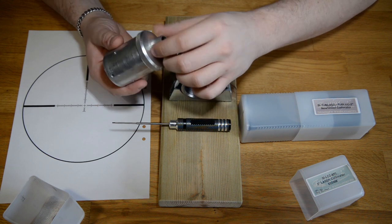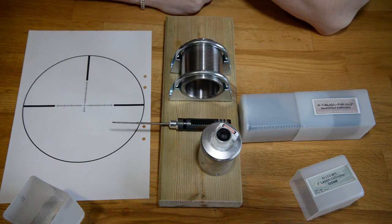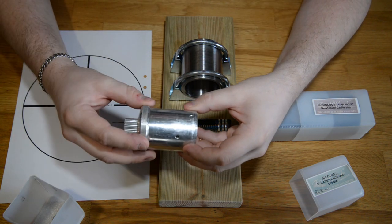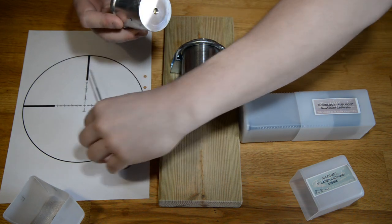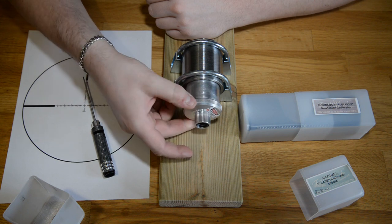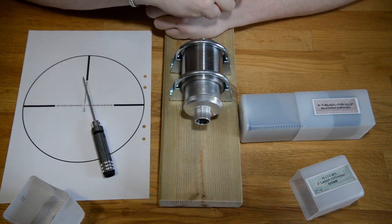So I just want to make sure that the collimator is collimated. And what does that mean? Well, if you mount the collimator into a focuser like this and just spin it around, you have to make sure that the laser dot stays in the same spot.